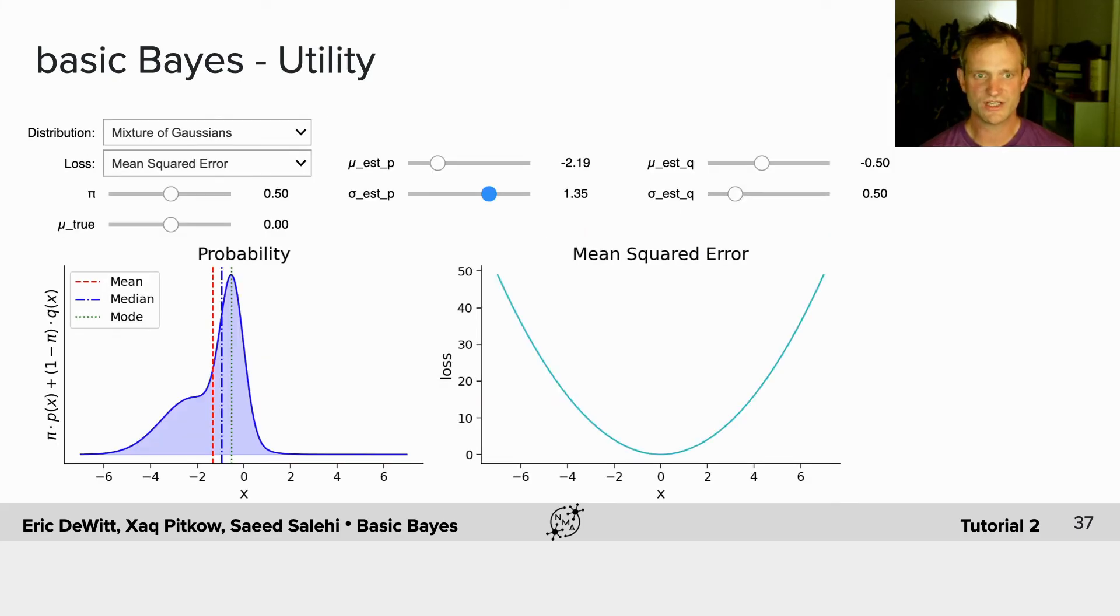Now it gets interesting when we use the mixture of Gaussians, because here the probability density isn't symmetric. And when we look at different loss functions, we're going to see minimums of the loss function corresponding to the different estimators I mentioned above.